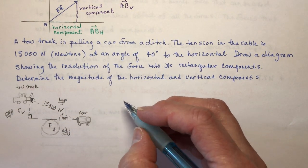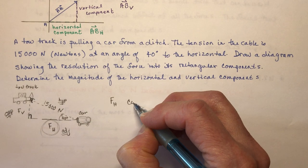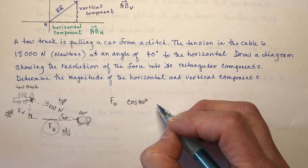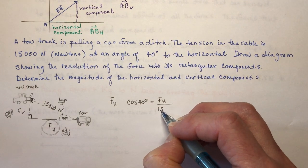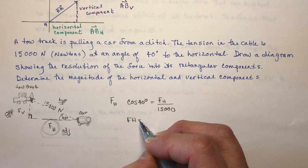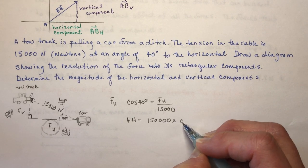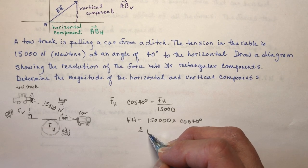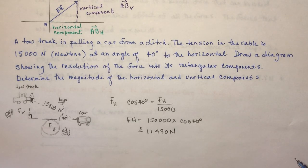To find the horizontal force, I'll use basic trigonometry — primary trig ratios. Here's my right angle, here's my 40° angle; this is the hypotenuse, this is the adjacent side, and this is the opposite side. So cos(40°) = F_horizontal / 15,000 N, which means the horizontal force is 15,000 × cos(40°).